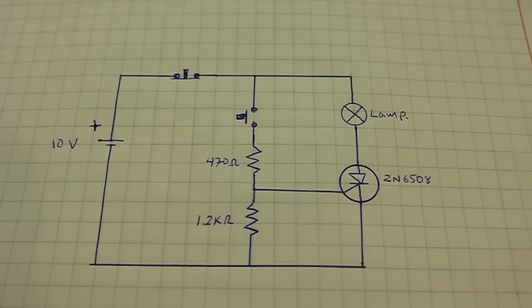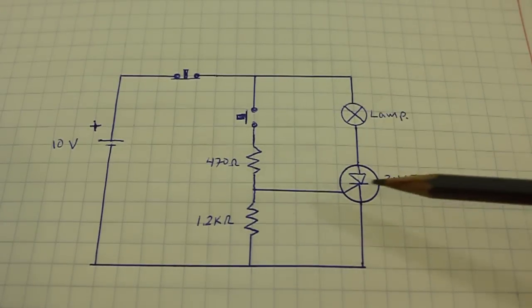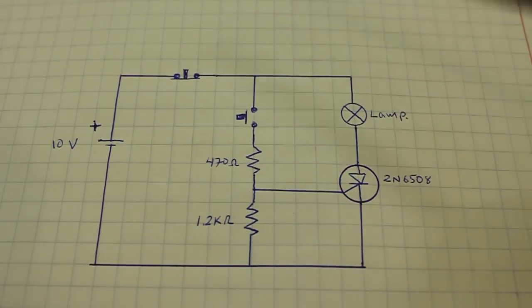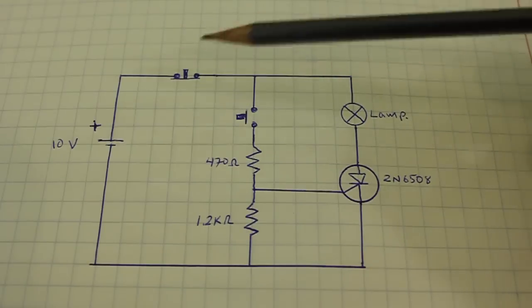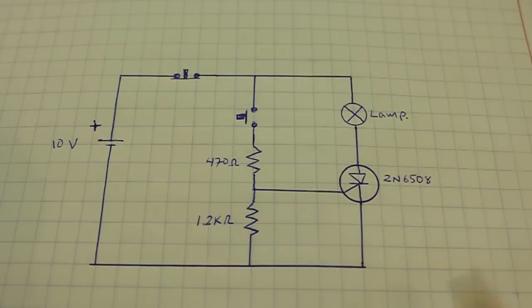Here we have a circuit to turn on a lamp using a thyristor. We have the lamp, the thyristor, a couple of resistors, normally open switch and normally closed switch, plus a battery or power supply.